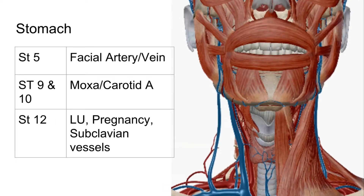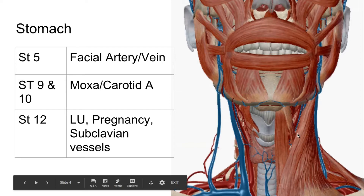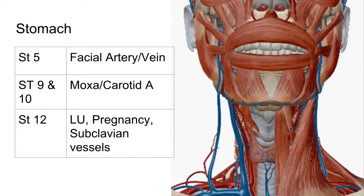Next is the stomach channel. Stomach 5 is directly in front of the angle of the jaw, right at the anterior border of the masseter muscle — here you can hit the facial artery or vein. Stomach 9 is level with the tip of the Adam's apple, about 1.5 cun lateral, on the anterior border of the sternocleidomastoid at the lateral border of the thyroid cartilage. The carotid artery lies deep to it, so caution is needed.